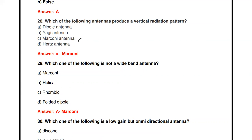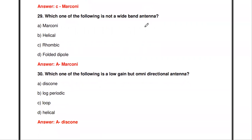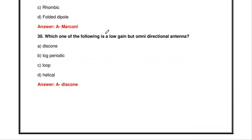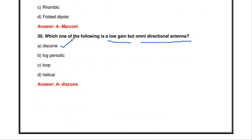Which antenna produces a vertical radiation pattern? The answer is Marconi antenna. Which one is not a wideband antenna? The answer is Marconi antenna — helical, rhombic, and folded dipole are all wideband antennas, and log periodic array is also wideband. Which one is a low-gain but omnidirectional antenna? The answer is the dicone antenna.